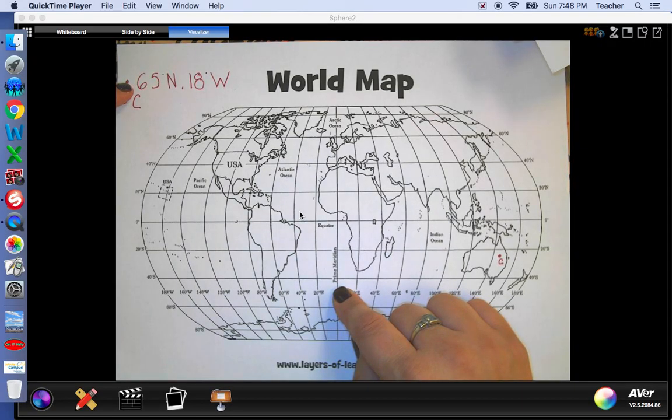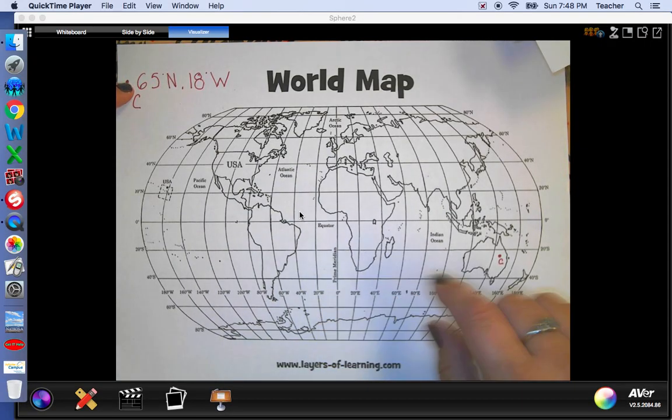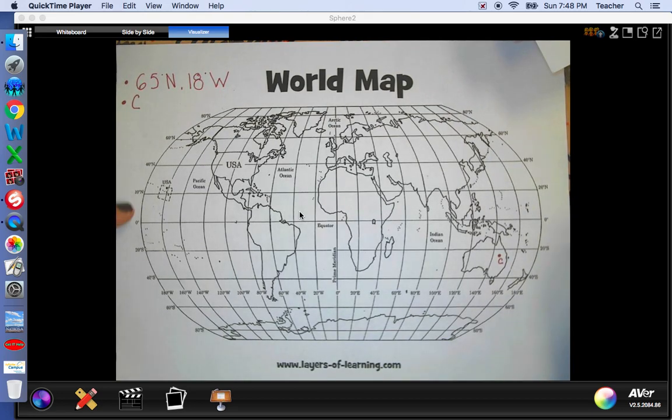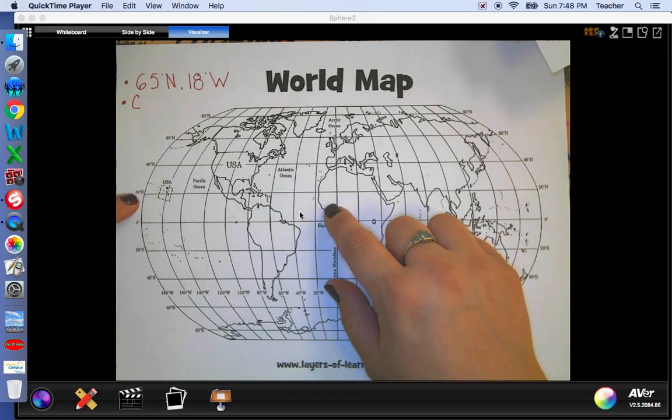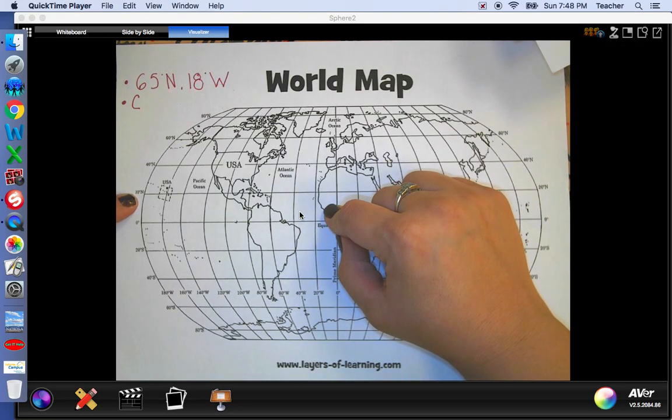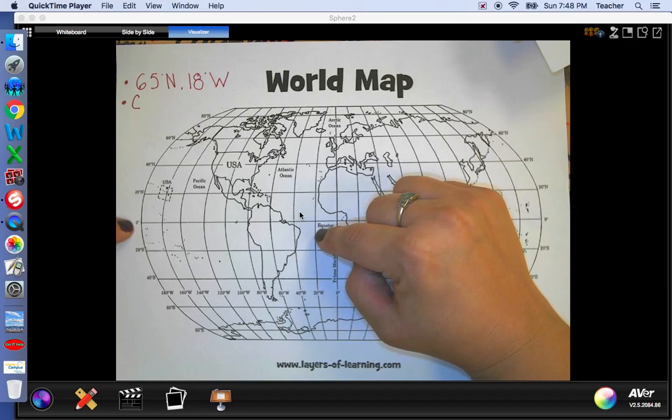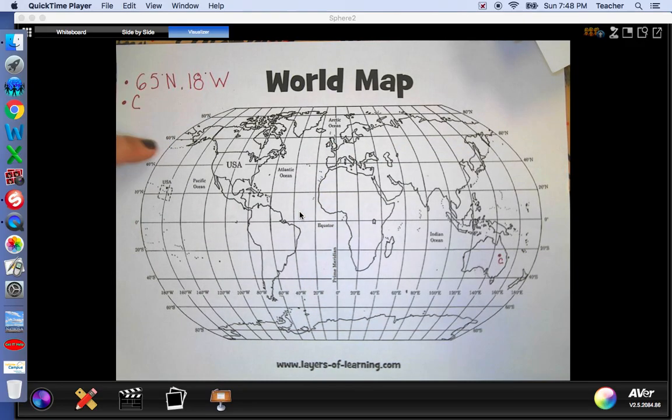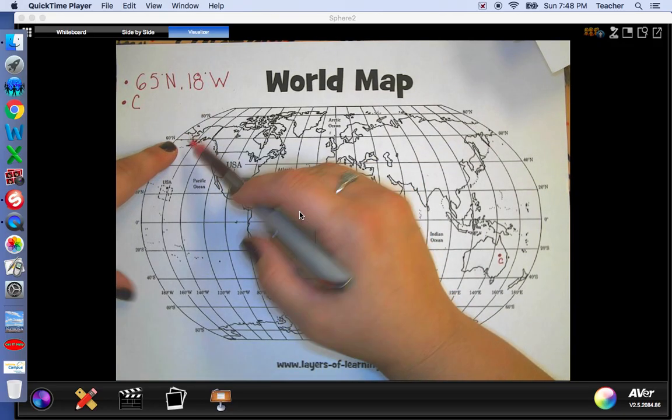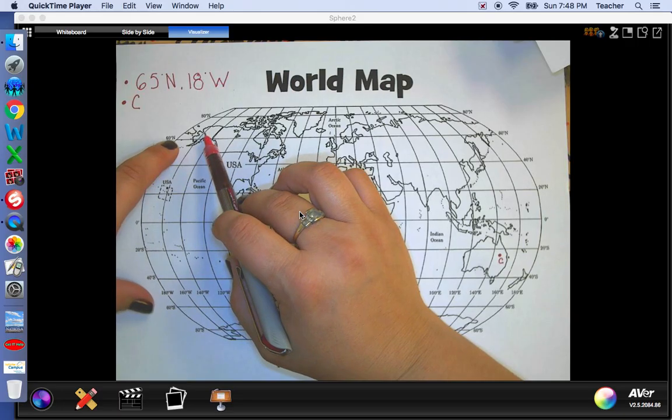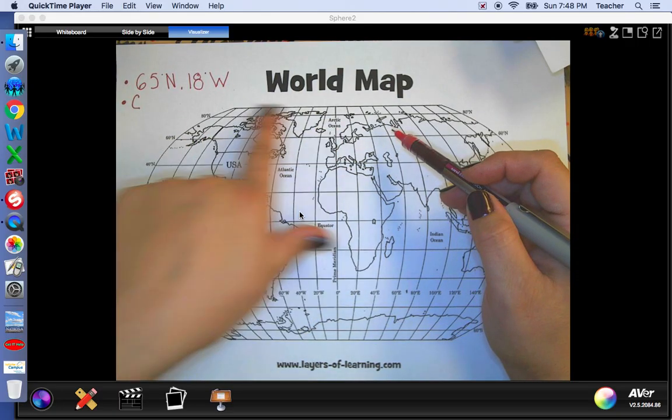So let's start with our north. The problem has 65 degrees north. So I'm going to start at my equator and I'm going to move up until I get close to 65 degrees. Now this map delineates in increments of 20. So we go 0, 20, 40, 60, and then 80. So I know I need to be between the 60 and 80. And since it's 65, it's just going to be a little bit above the 60. So I know I'm going to be in this range somewhere.